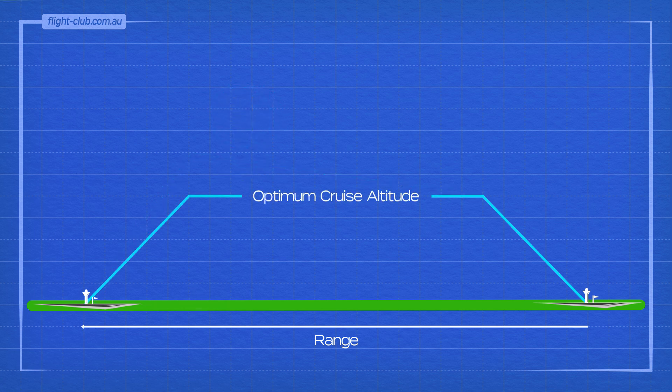Meteorological conditions also affect the optimum cruise altitude. On a cold day the maximum altitude may be above the optimum cruise altitude but on a hot day the aeroplane may not be able to achieve the optimum cruise altitude as the maximum altitude may be below it.